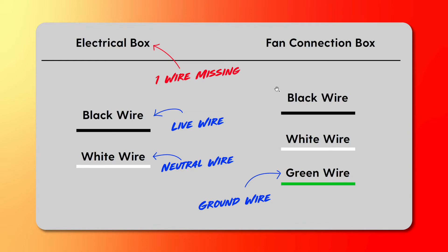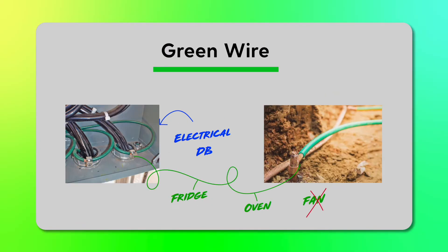And the third wire is the green wire which is missing, and this green wire is the ground wire. Now let me explain what is a ground wire and how it works, and is it necessary to have a green wire or not.